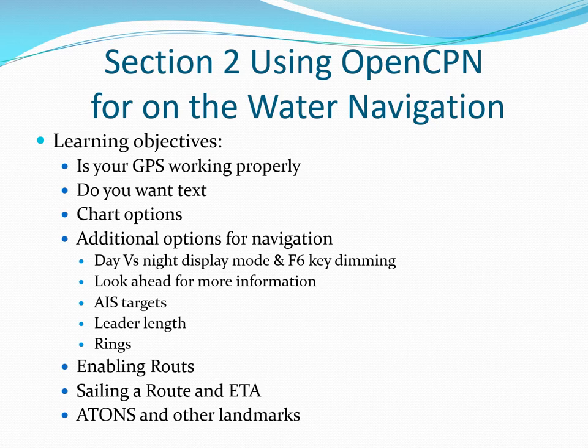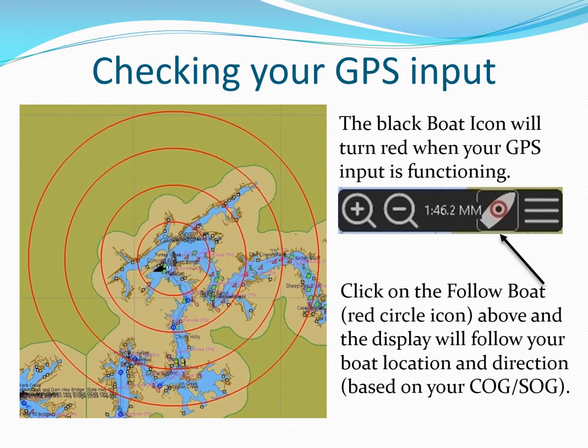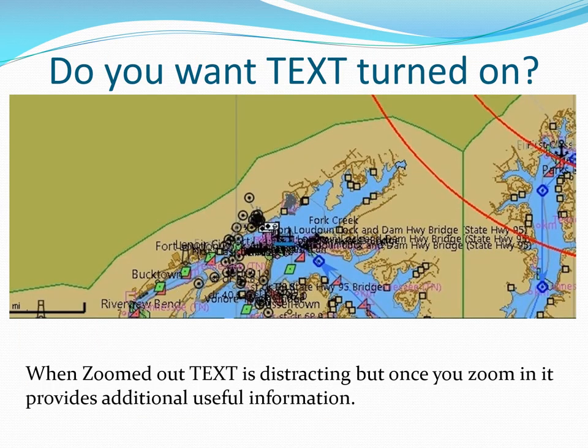After planning, OpenCPN works very well as an actual navigation tool. You can run it on a laptop or tablet. Clicking on the ship icon will start following the ship's location from GPS data input, moving the chart as it goes. Things can get confusing when zoomed out with a lot of text displayed, but approaching a harbor or marina you need all of it.